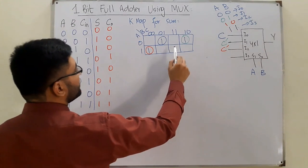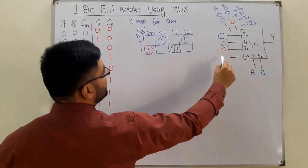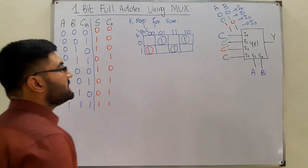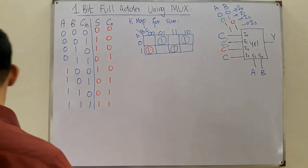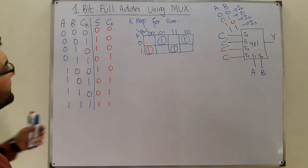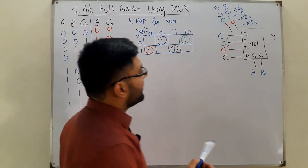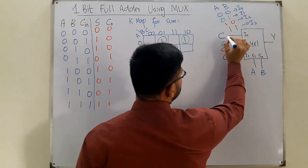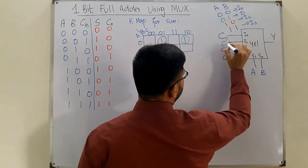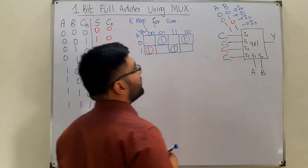Finally, when both A=1 and B=1 (I3), we have those two remaining blocks where C is high and C complement is low. This is simply the C input, so I3 = C.